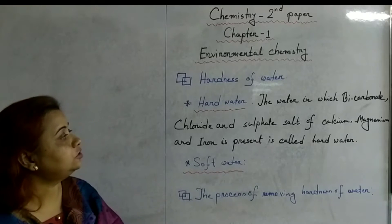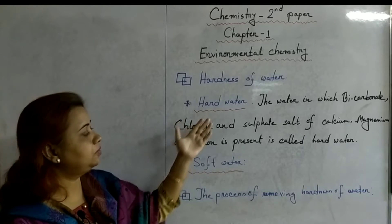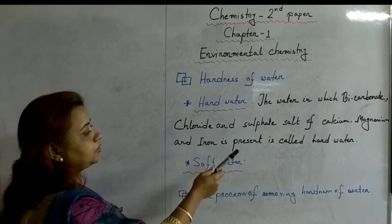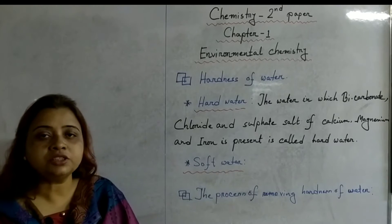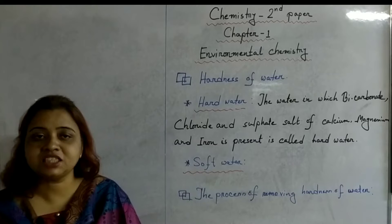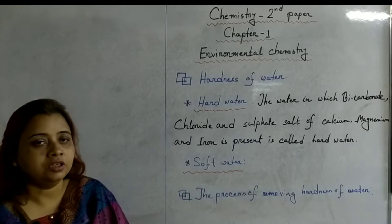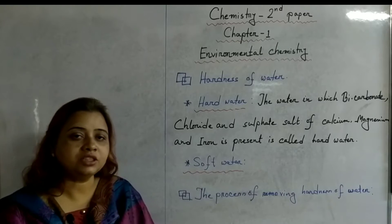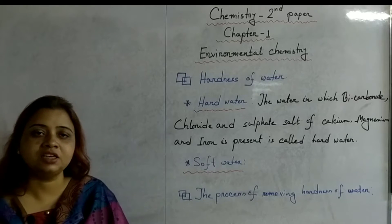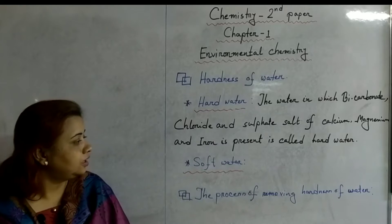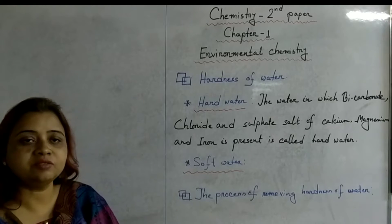Let's come to the hardness of water. What is hard water? Water in which bicarbonate, chloride, and sulphate salts of calcium, magnesium, aluminium, and iron are present is known as hard water. Examples of hard water include tube well water and river water.